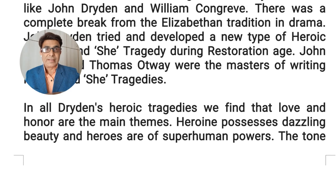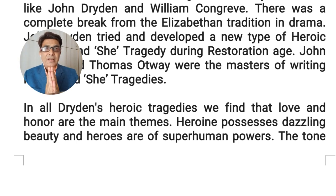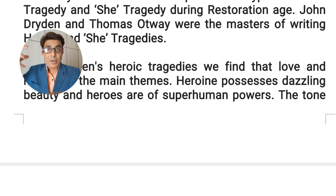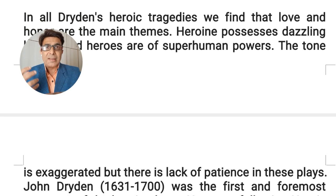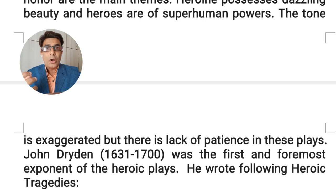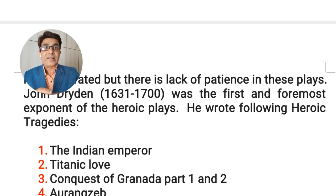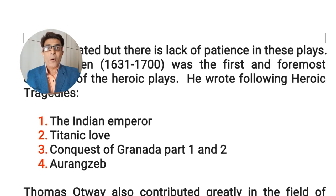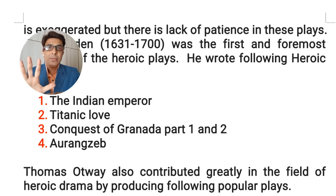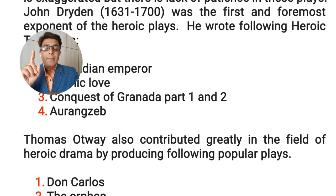In heroic tragedies, the heroine possesses dazzling beauty and heroes have superhuman powers — they are not common men. The tone is highly exaggerated, which is why it is called heroic tragedy. John Dryden wrote five heroic tragedies: The Indian Emperor, Tyrannick Love, Conquest of Granada Parts One and Two, and Aureng-Zebe. Thomas Otway also wrote four heroic tragedies: Don Carlos, The Orphan, Venice Preserv'd, and a tragedy on a grand scale.